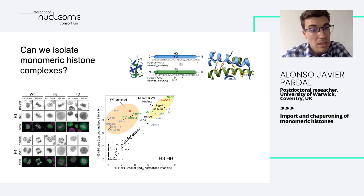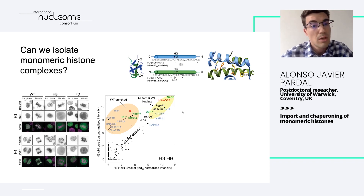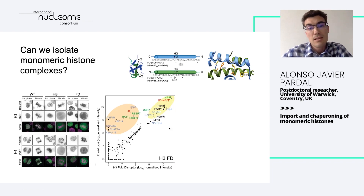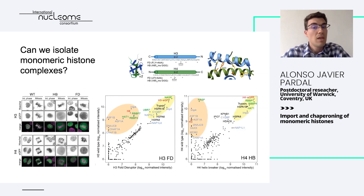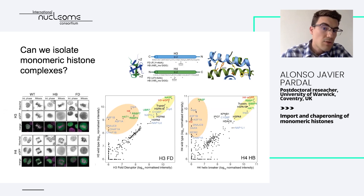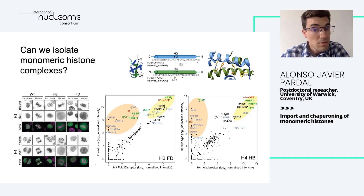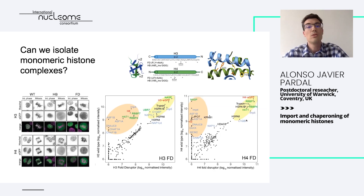What was a surprise was to see importin-5 there, which was known as a partially redundant importin in the import of histones H3 and H4. We also confirmed the result with NASP, and the other mutant gave very much the same results. In the case of the H4 mutants, we lost the dimerizing obligate interactors and NASP, so we lost the interaction with the H3 binder, but the interaction with the HAT1 and RBAP7 complex was very strongly retained, as was the interaction with importin-5.